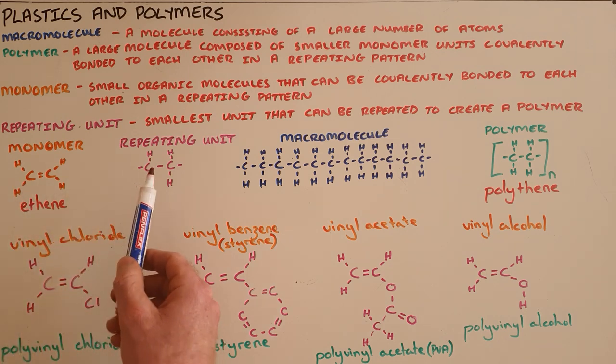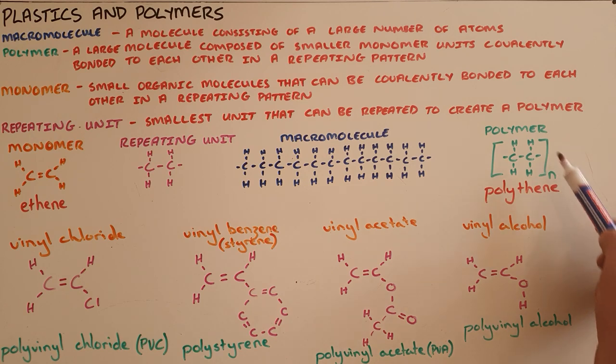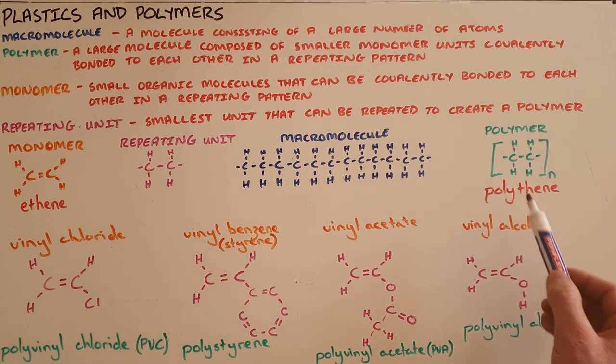we can, by breaking that double bond, create a repeating unit that can repeat itself n number of times, which creates a polymer called polythene. The reaction that is required for this is called polymerization.